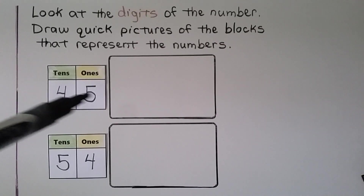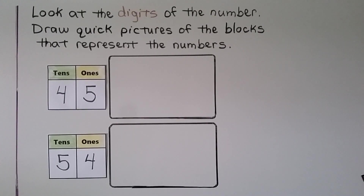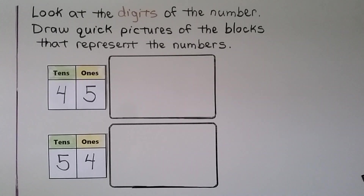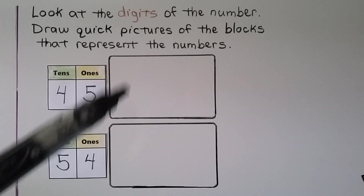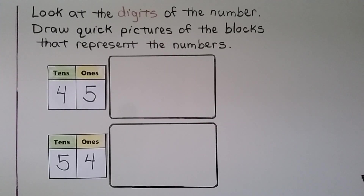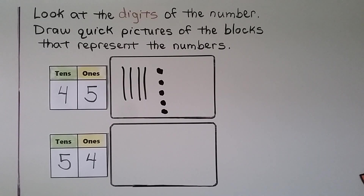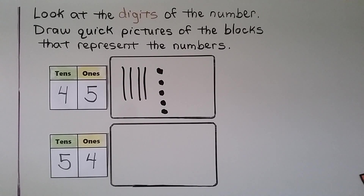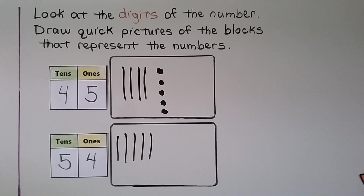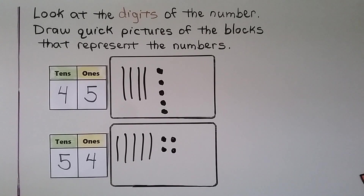Now we need to look at the digits of the number and draw quick pictures of the blocks that represent the numbers. This number has 4 tens and 5 ones — we can draw 4 lines as the 4 tens, then 5 dots for the 5 ones. Now we've made a quick picture to represent 45. For 54, the 5 is in the tens place and the 4 is in the ones place — we draw 5 lines and 4 dots. That's 54.